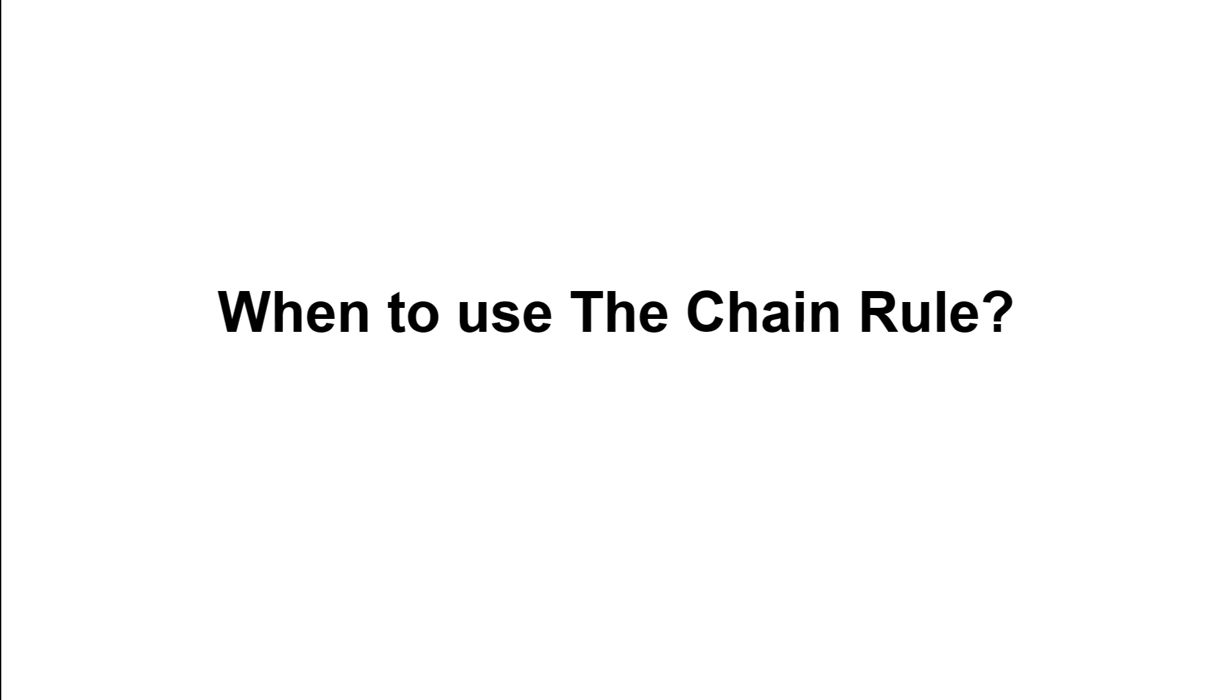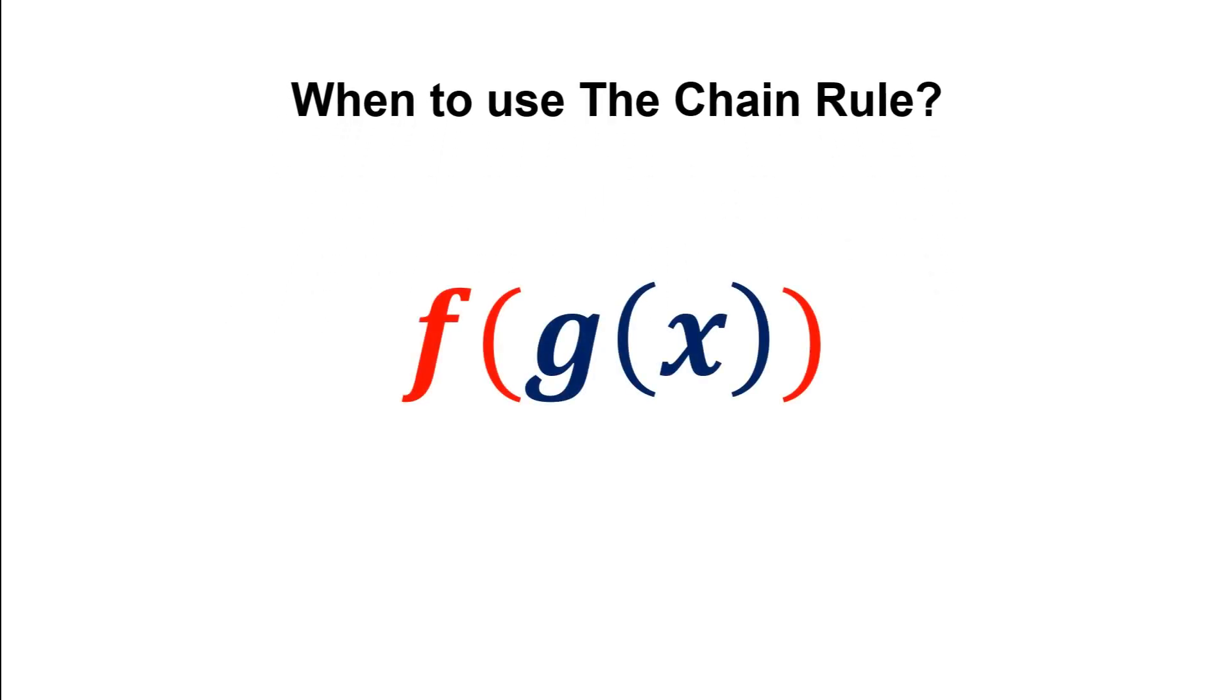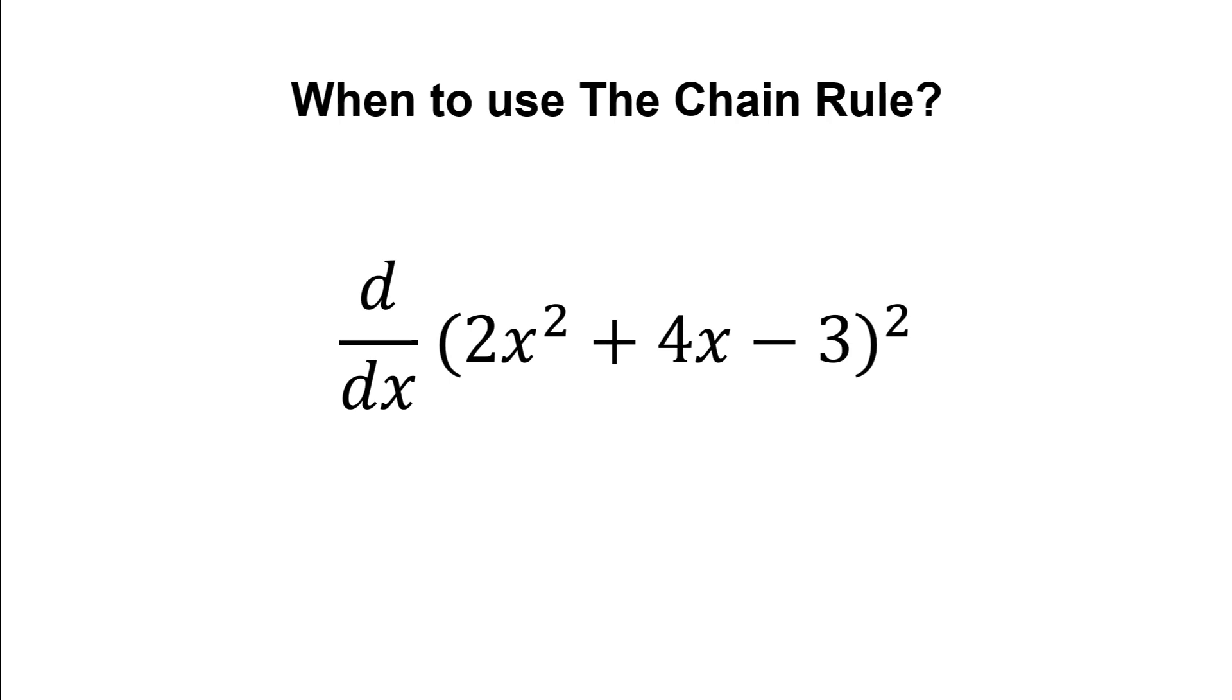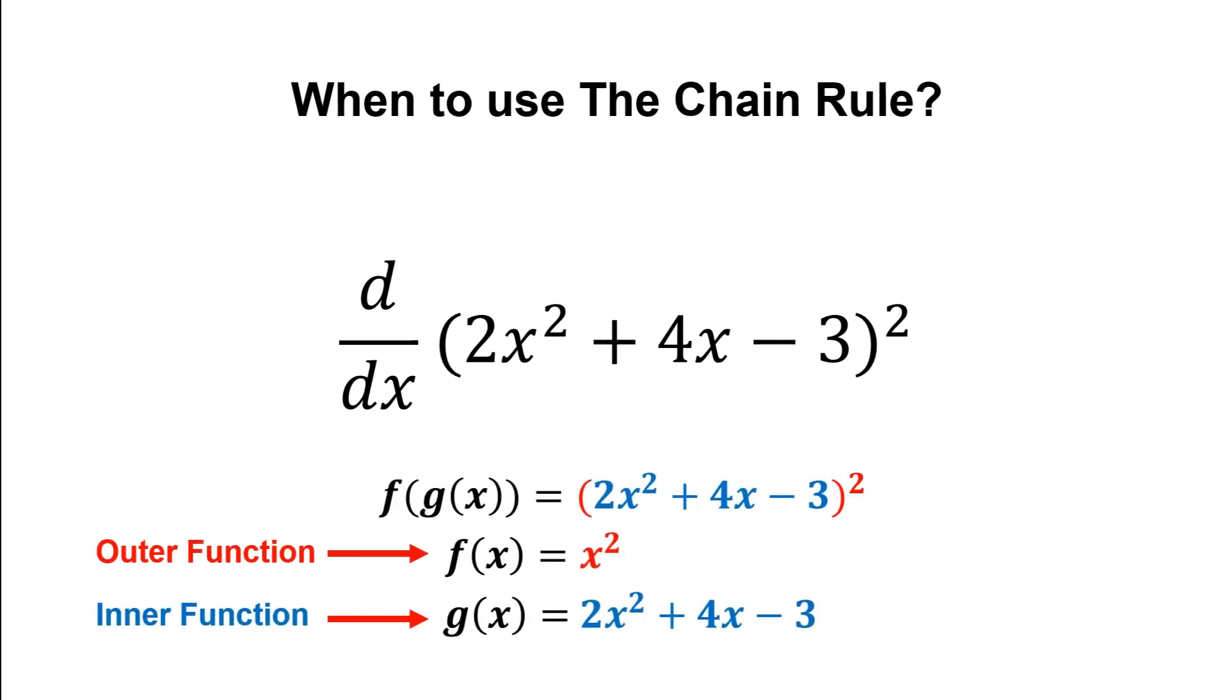The chain rule is used when finding the derivative of a composite function. For example, this function can be separated into outer and inner functions. Notice that when we place g of x into f of x, we will be getting the original function.